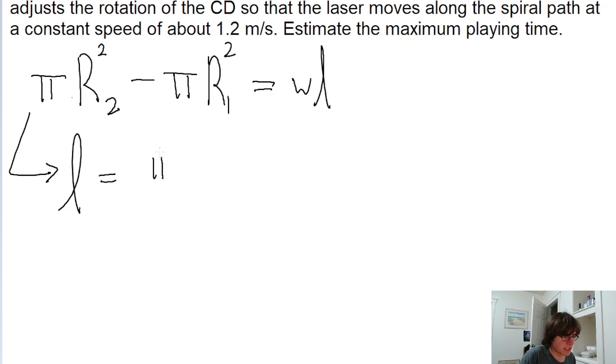So to simplify this, I'm going to factor out the pi's, so pi times r2 squared minus r1 squared, all divided by w, is our answer to part a.